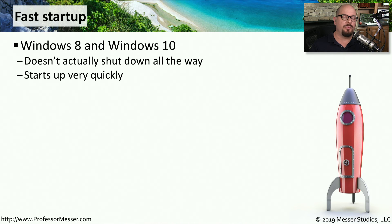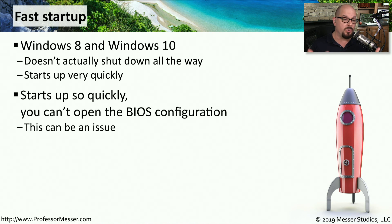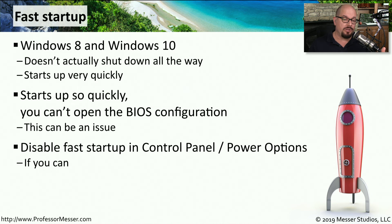Another challenge with getting access to the BIOS is that modern systems tend to start up very quickly, especially those running Windows 8 or Windows 10. Those operating systems don't actually shut down all the way, so when you start them back up they start very quickly. The problem is they start so quickly that you have no way to start the BIOS configuration. You can disable this fast startup function in the Control Panel under Power Options if you have access to the operating system.